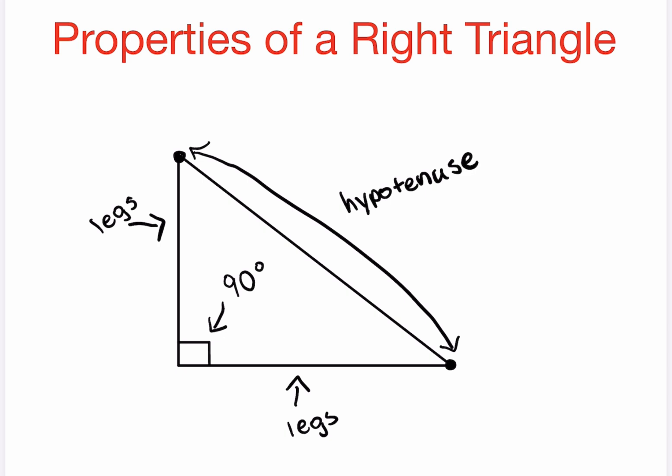So now that we know that, in terms of variables, these two legs are labeled as A and B, and then the hypotenuse is labeled as C. So these are the most important factors of a right triangle, and it's what we're going to need to know if we're going to use the Pythagorean Theorem to solve for the sides of these triangles.